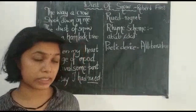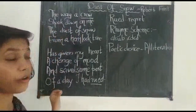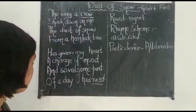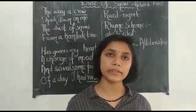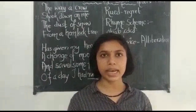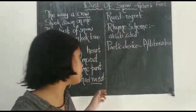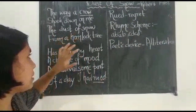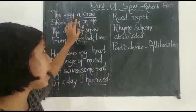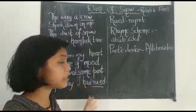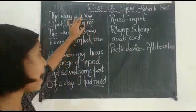Now let us see the meanings. The way a crow shook down on me the dust of snow from a hemlock tree. For those of you who don't know what a hemlock tree is, it is a tree that is seen in northern America and eastern Asia. It has small cones and short flat leaves. It is poisonous in nature, so here it depicts something sad or darkness. And similarly, the crow is a scavenger and it is a representative of death or mourning and is also considered as a bad omen.